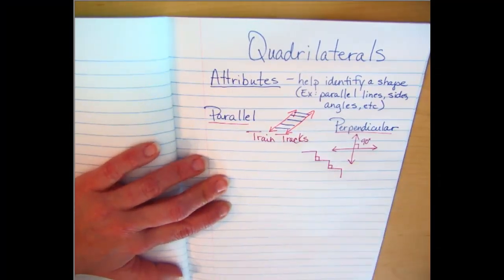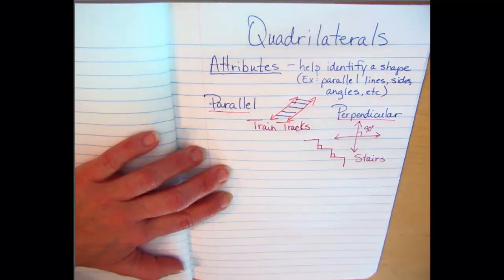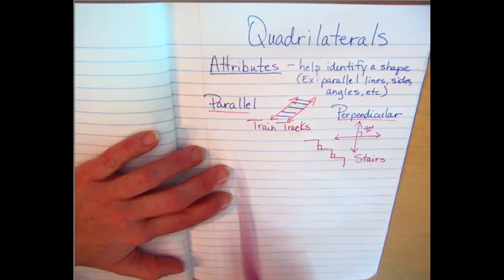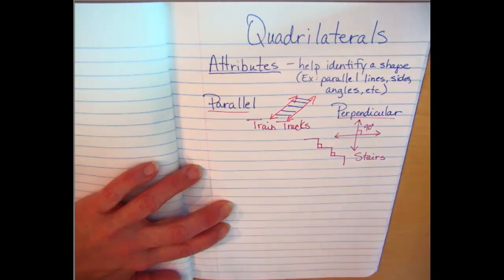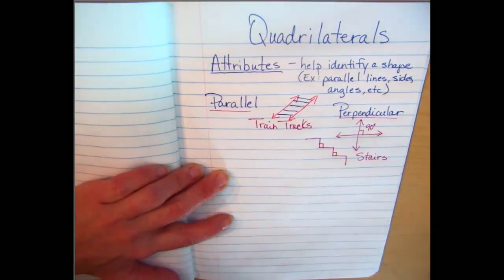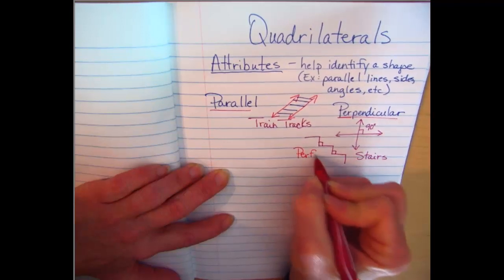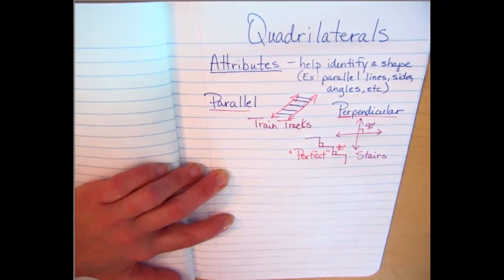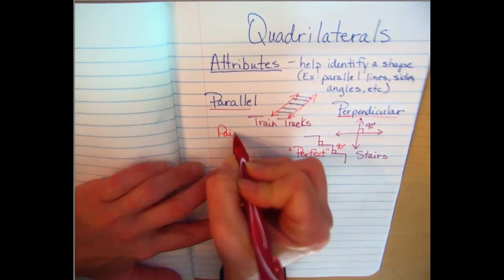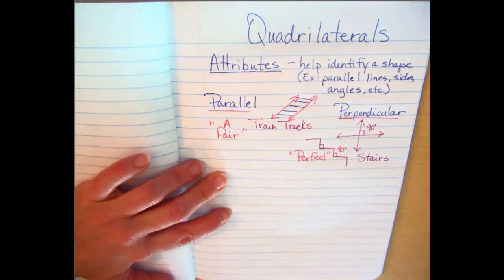A student pointed out that parallel starts with 'pair' — so think of a pair of lines running side by side. And for perpendicular, think of 'perfect' — it forms a perfect 90-degree right angle. That's a great memory trick: pair for parallel, perfect for perpendicular. I love that and I'm going to use it from now on — thank you!